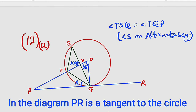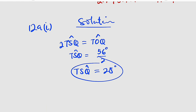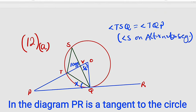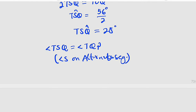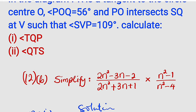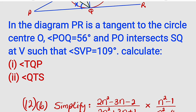We have already seen that TSQ is equal to 28 degrees. Since these two angles are equal, it implies that angle TQP must also be equal to 28 degrees. And hence we have answered Roman numeral one.